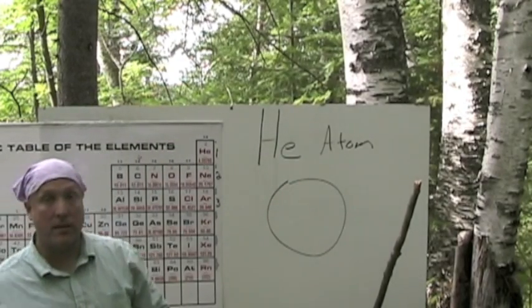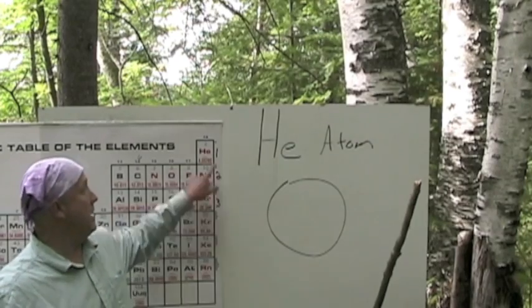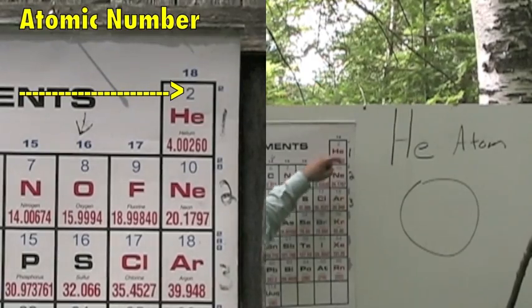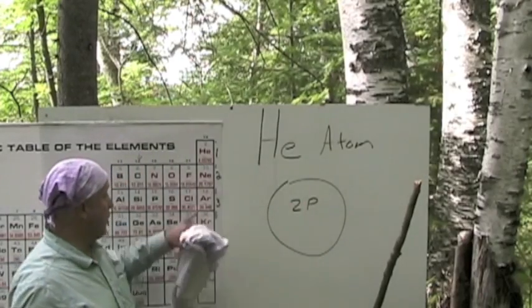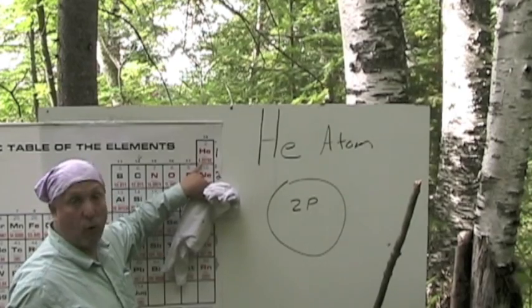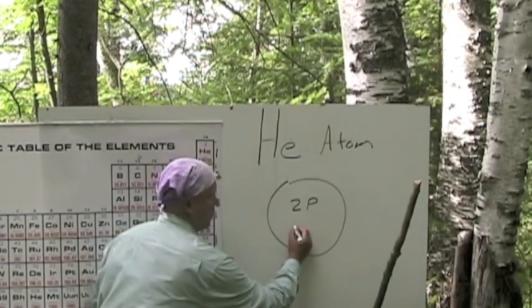Now, how many protons does helium have? It has atomic number of 2, so that means you have 2 protons. 2P. Then, we calculated the number of neutrons. It was 4 minus 2. It goes to 2 neutrons.